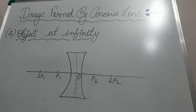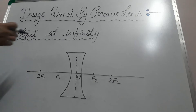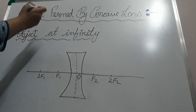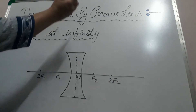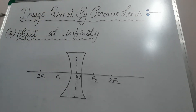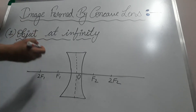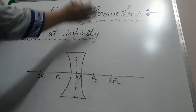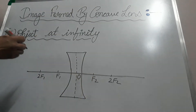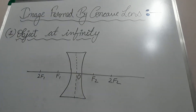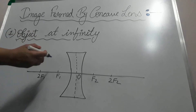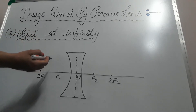Good morning students. In this video I am going to explain a very important topic: image formation through the concave lenses. Concave lenses are diverging lenses — the rays will not meet, they will diverge and spread. So we will discuss about the image formation through the concave lens.